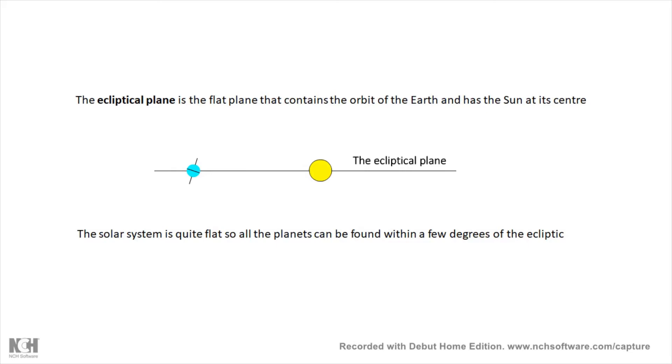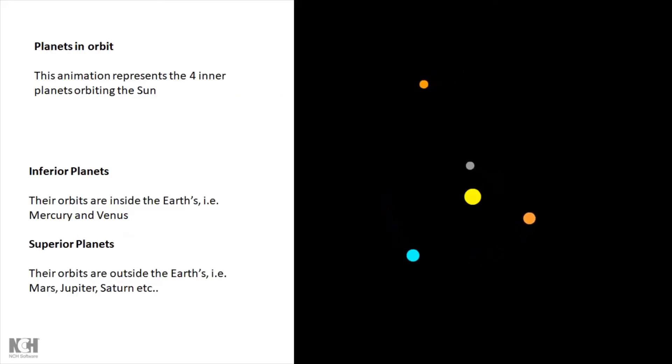But they're usually pretty close to the ecliptic, that's where you would expect to find them. Notice on the earth here the tilt of the earth and its equator, and that kind of explains why the ecliptic is at 23.5 degrees to the celestial equator.